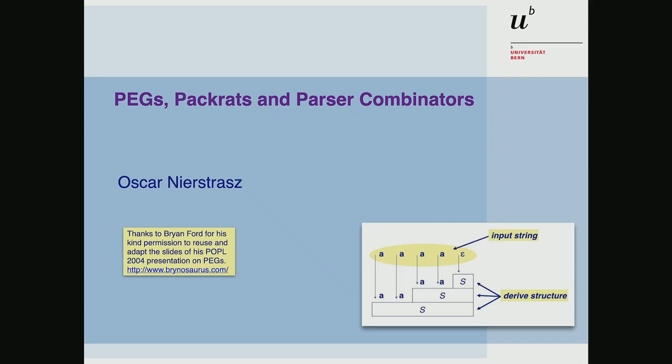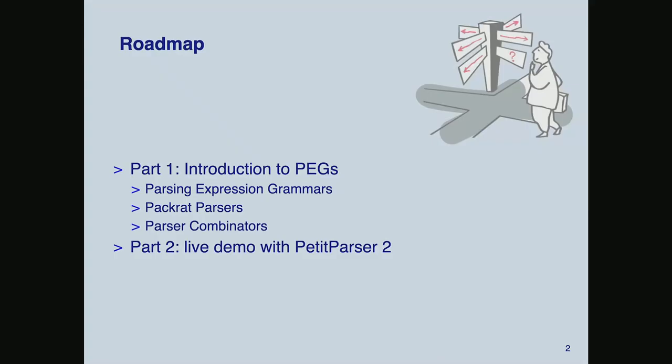What I want to tell you about today is a bunch of related technologies called PEGs, pack rats, and parser combinators. PEGs are Parsing Expression Grammars. This is the outline — in part one I'll try to stick to the first 45 minutes, going a bit fast. I want you to interrupt me if there's something you don't understand or find interesting, because a lot of the stuff is going to be familiar to you.